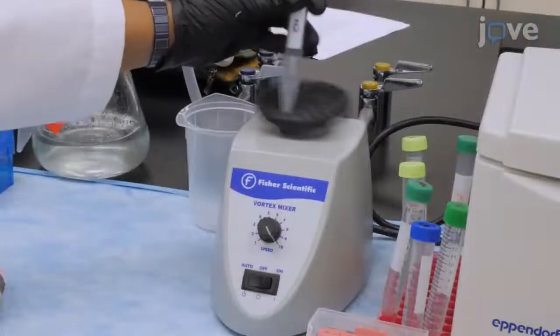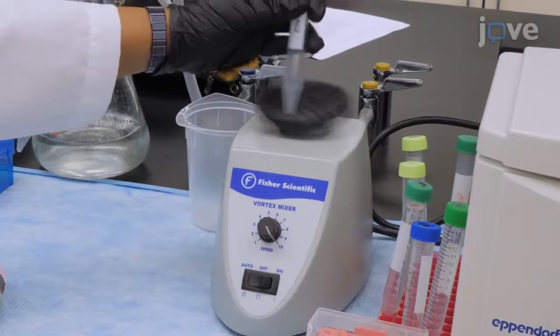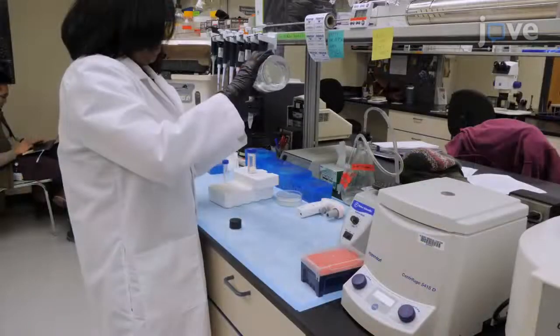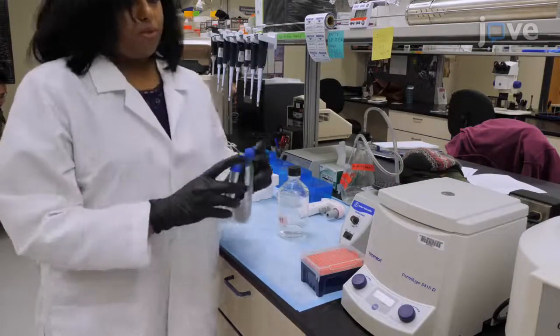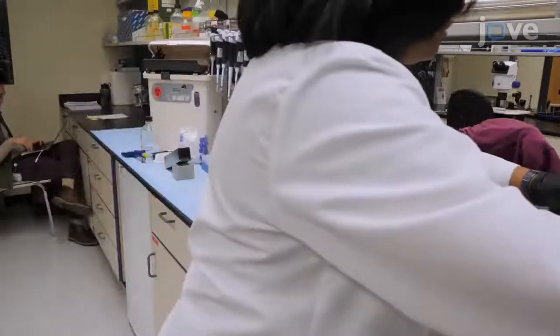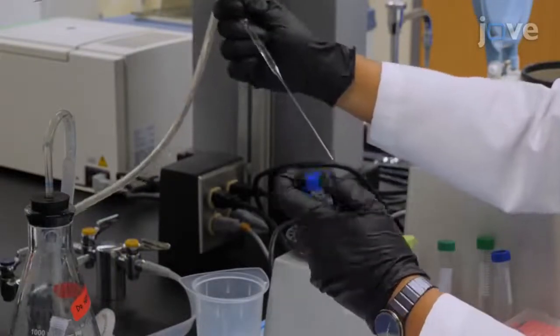Add three to four milliliters of bleach solution to each tube and intermittently vortex for six minutes. Then, add M9 buffer to fill each tube and spin at 6,180 g for one minute. Aspirate the supernatant and repeat this wash with M9 three times.